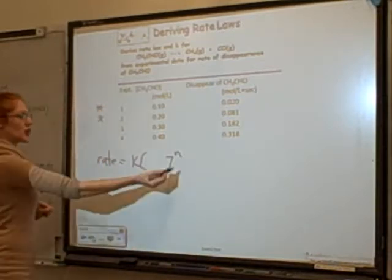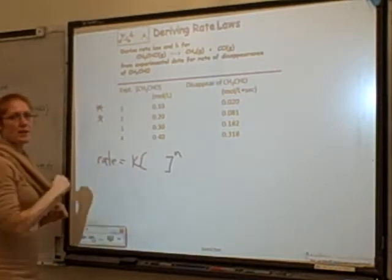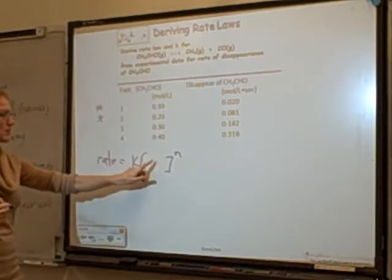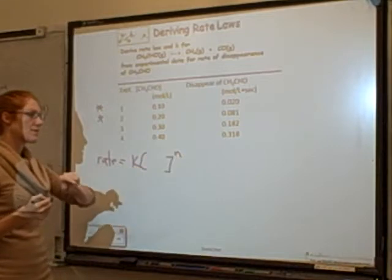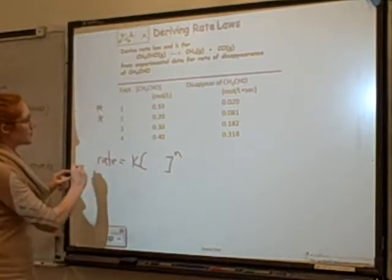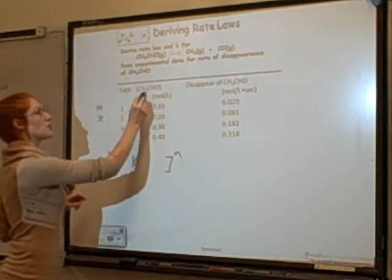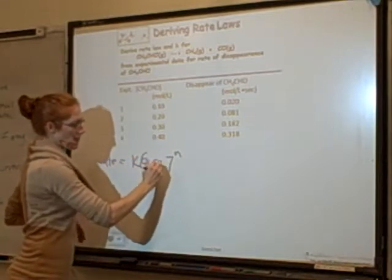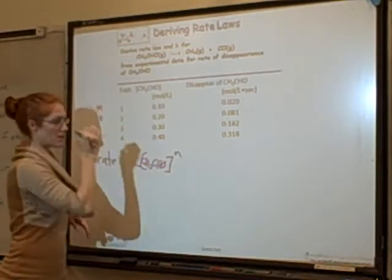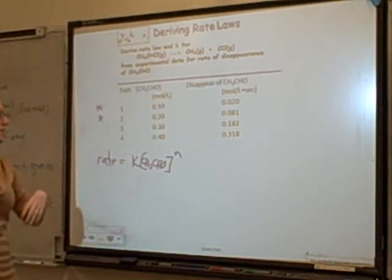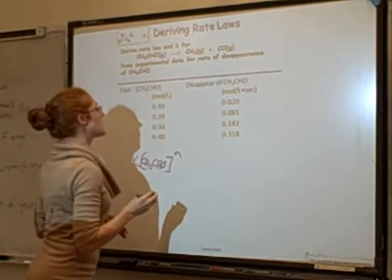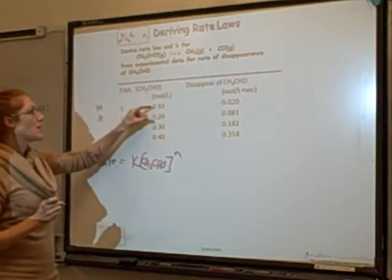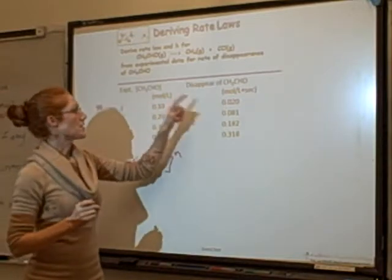This is the general rate law equation — we're trying to figure out what k is and what the order is. So I have rate equals k times the concentration of CH3CHO, and I want to solve for the order n and for k. The easiest thing to do is to pick two experiments. I'm going to pick experiments 1 and 2 and see what happens as I double the concentration.